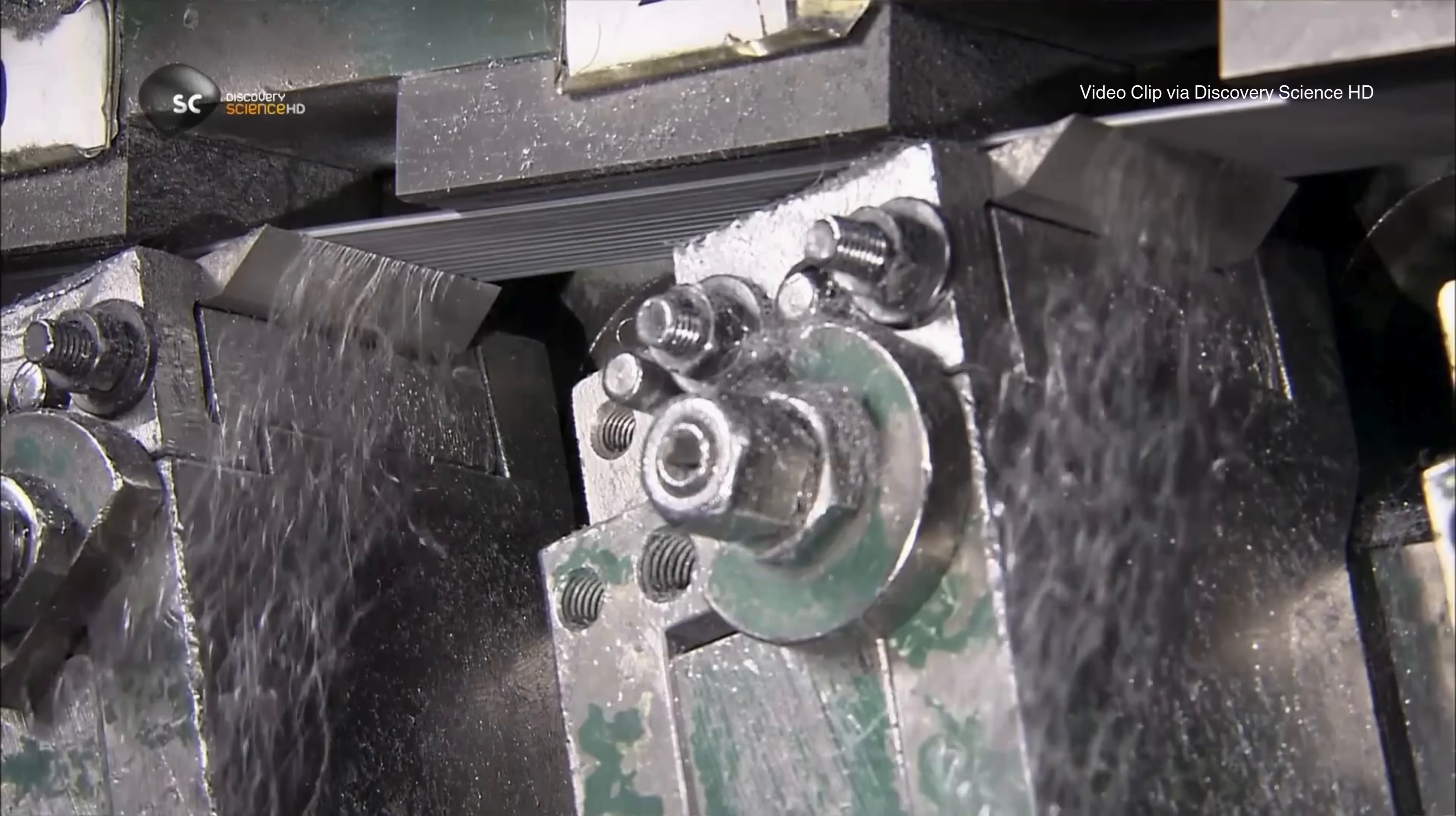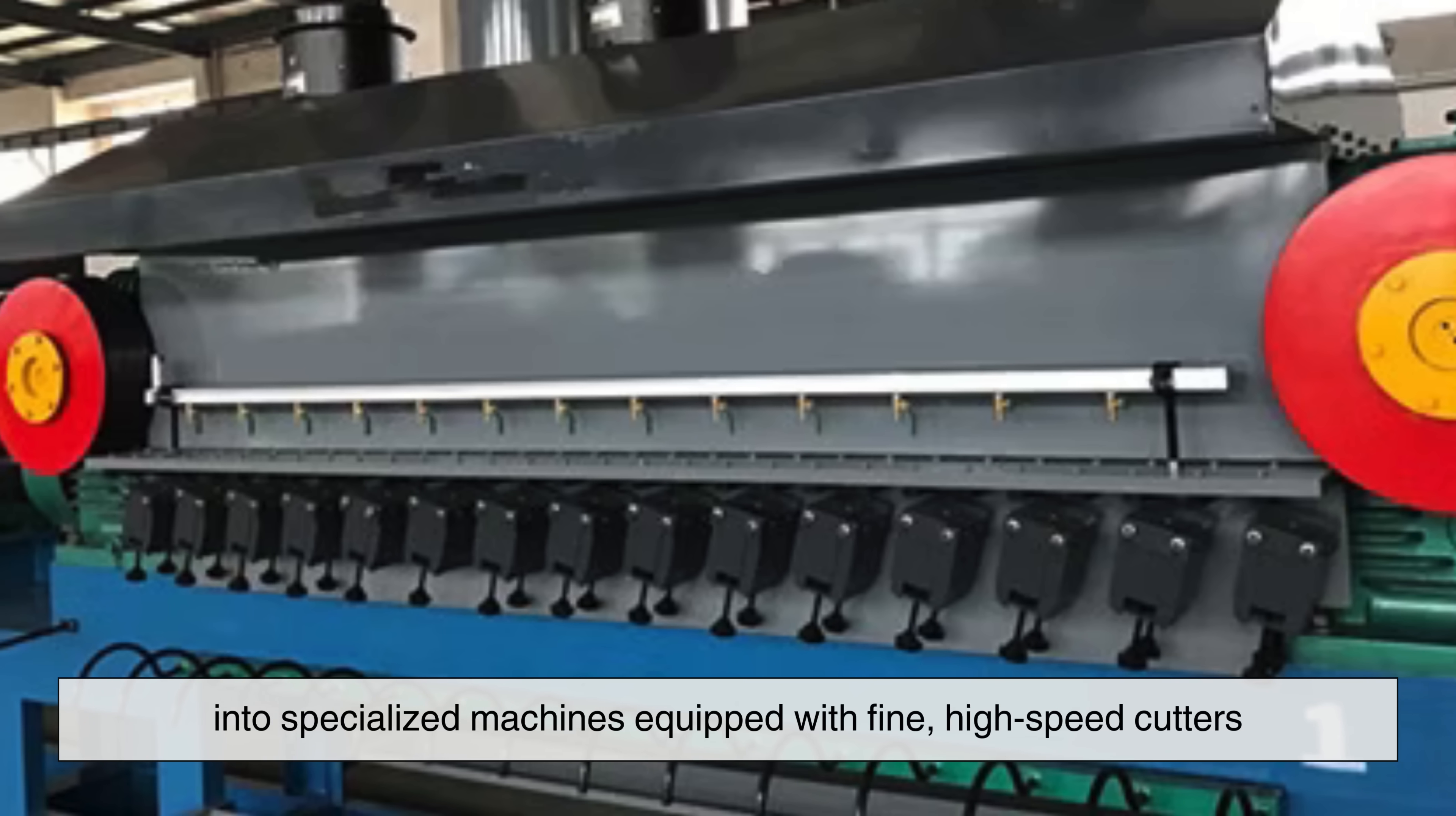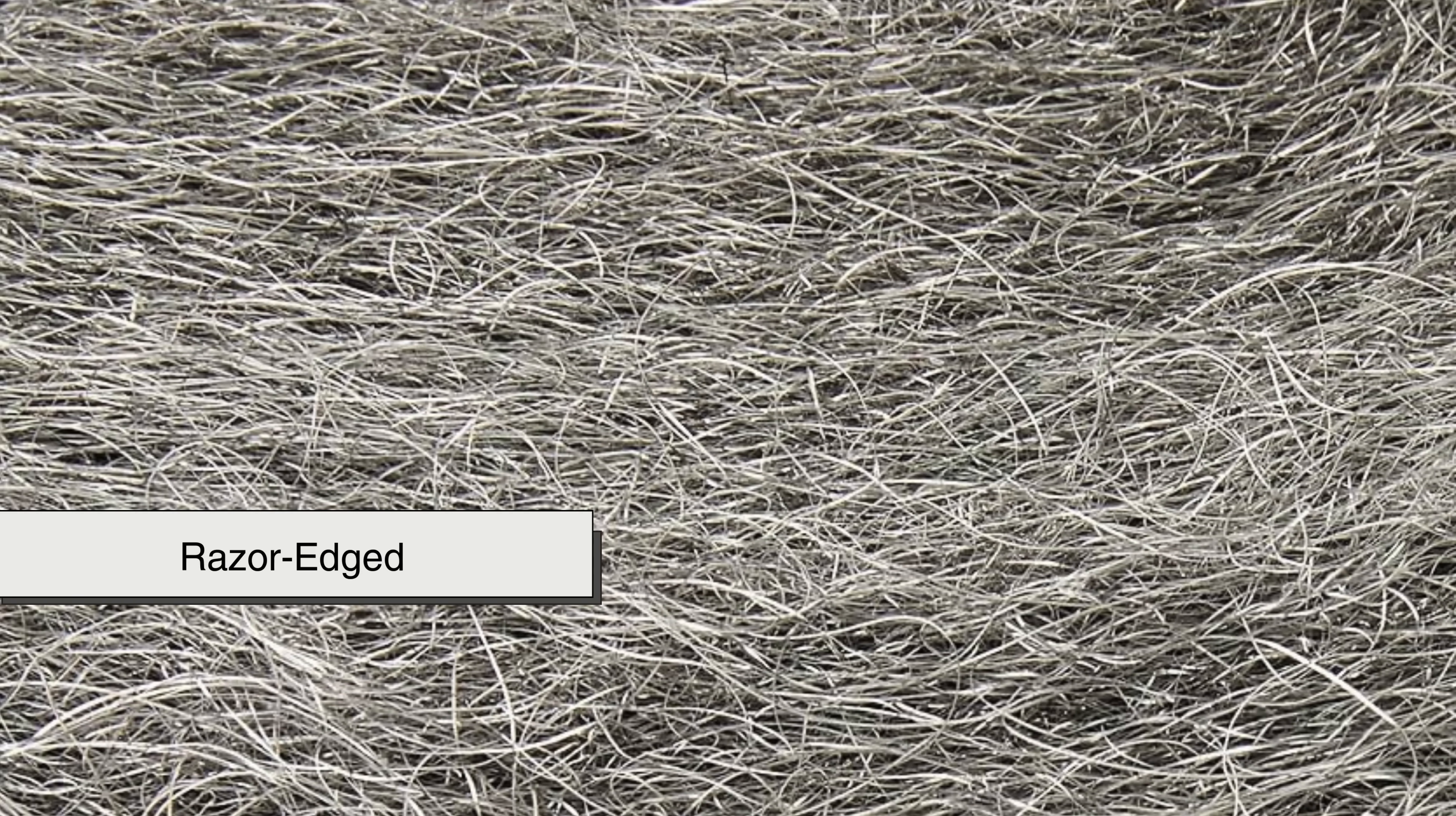Once cooled and cut, the steel enters the next phase of its transformation: shredding. High-carbon steel rods or sheets are loaded into specialized machines equipped with fine, high-speed cutters. These machines slice the metal into micro-thin filaments, each barely thicker than a human hair. The strands coil and twist, forming a dense, tangled mass that is gradually gathered into pads or rolls. Each filament retains the strength of steel, but is now flexible, splintery and razor-edged.